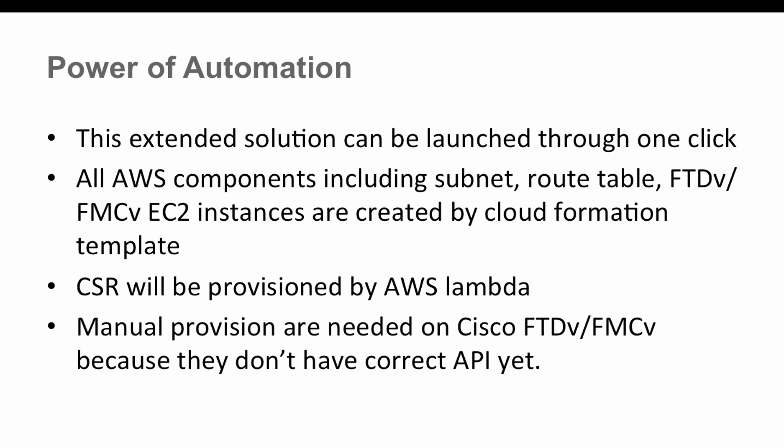Once the Cloud Formation template is created, it will also launch a Lambda function running in the background to provision the CSR — including the BGP configuration and static routes. Manual provisioning is still needed for Cisco FTD Virtual and FMC Virtual because they don't have a correct API to provision BGP or static routes yet, but IPS is supported and full API support will come in the future.